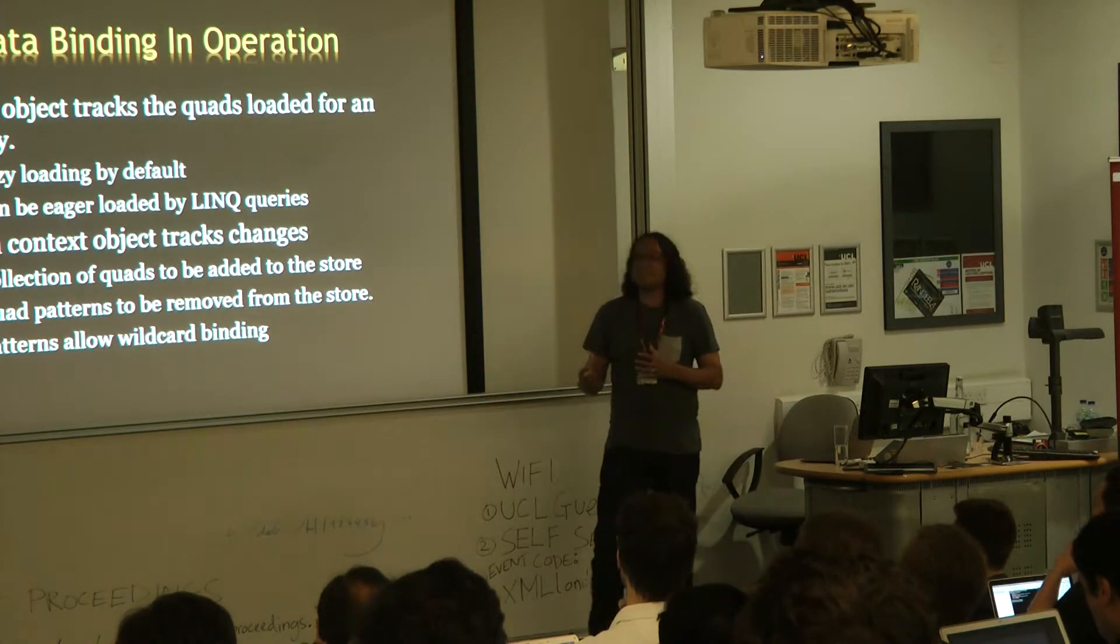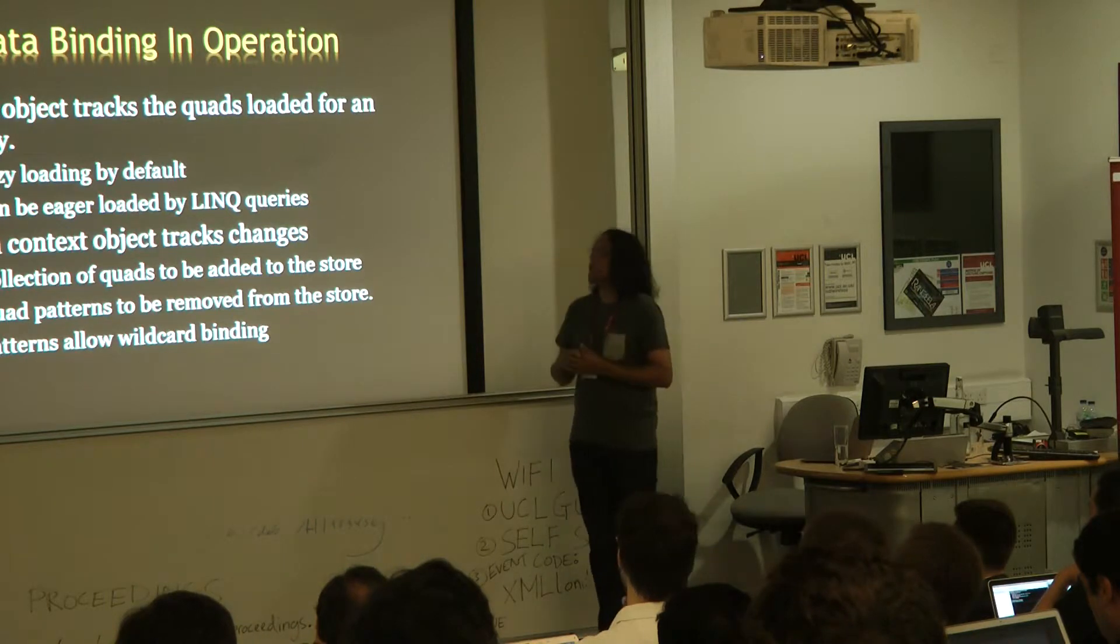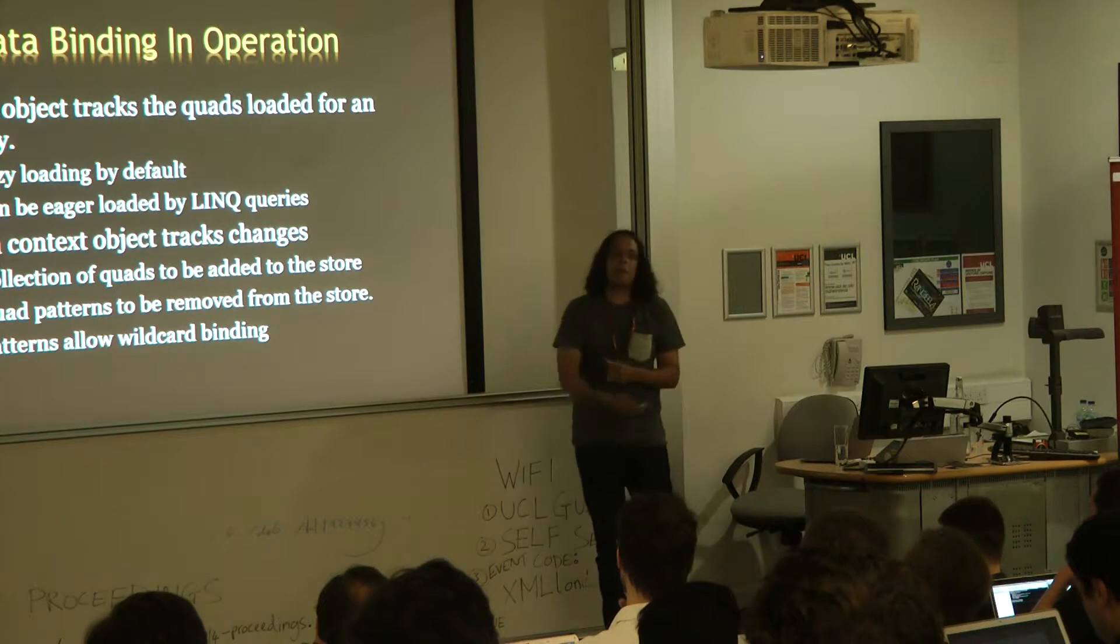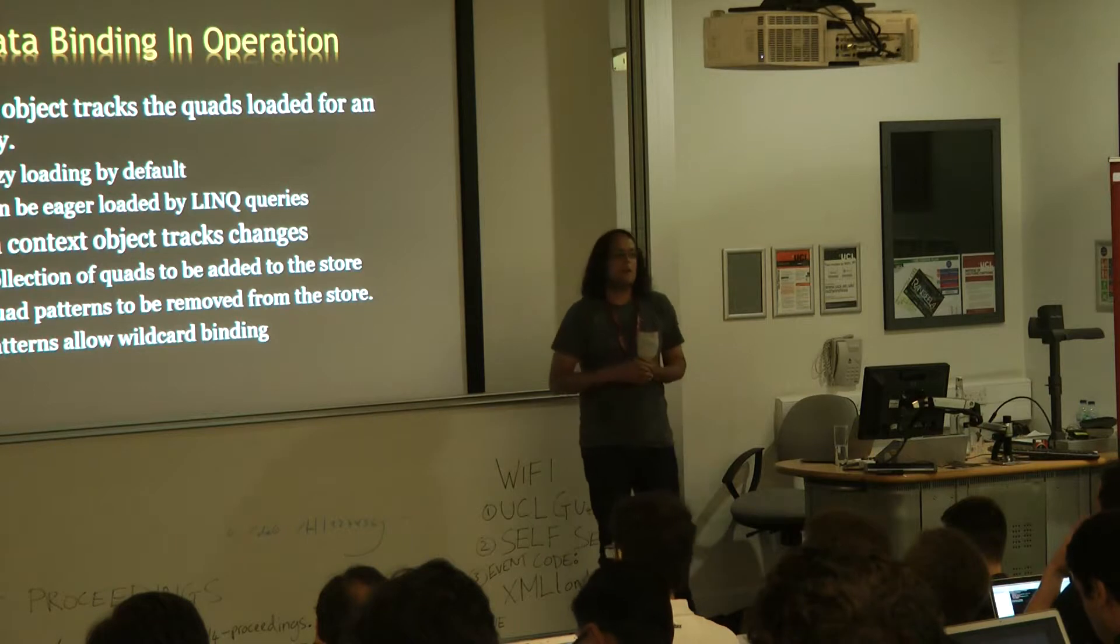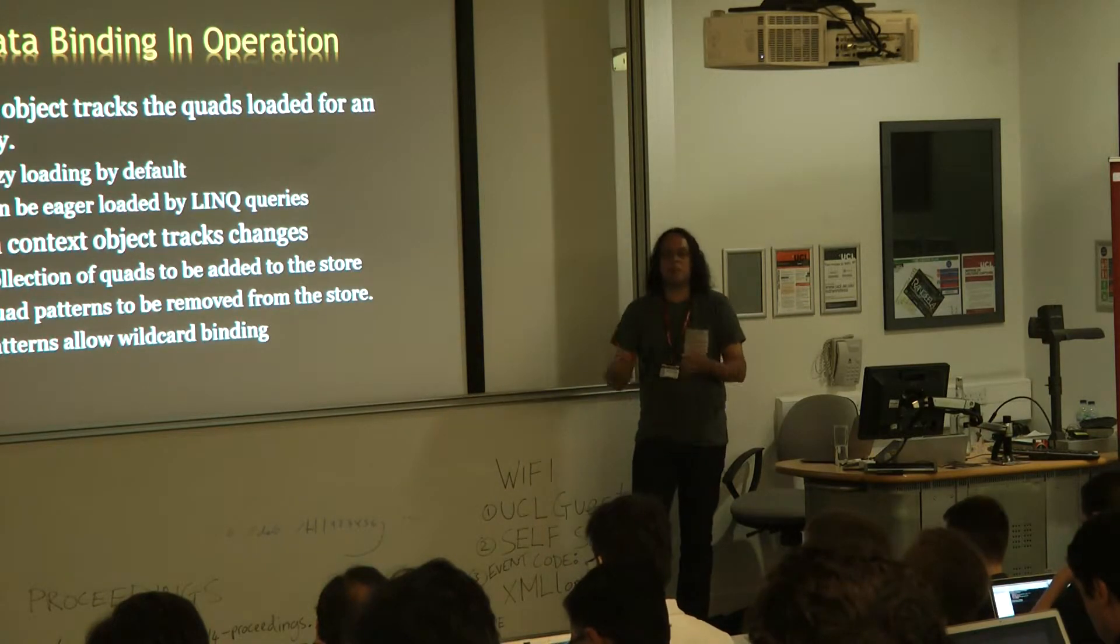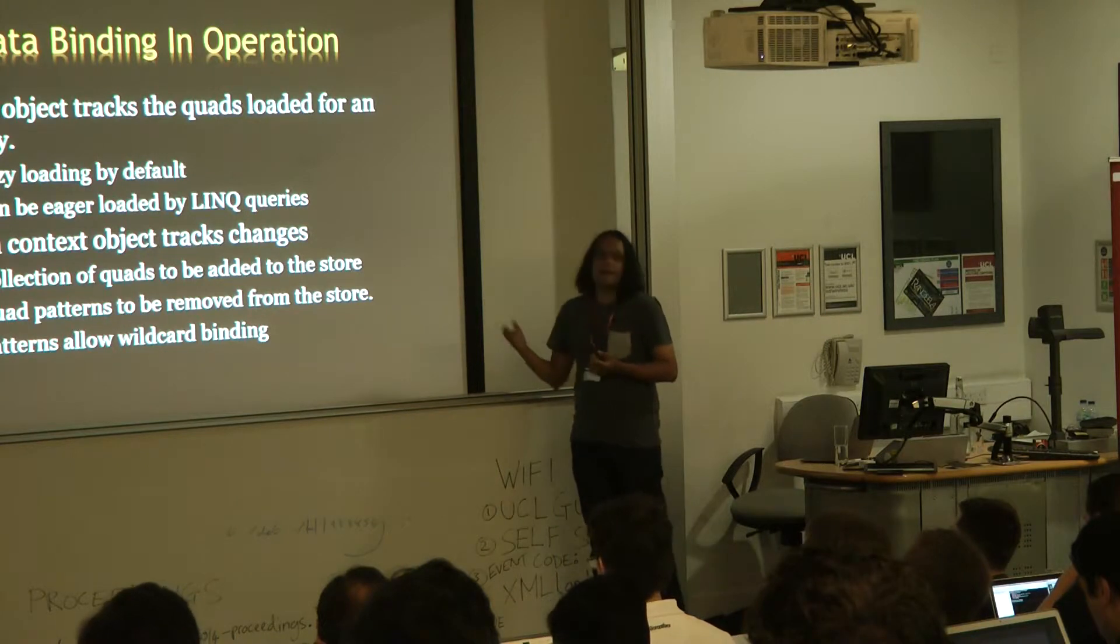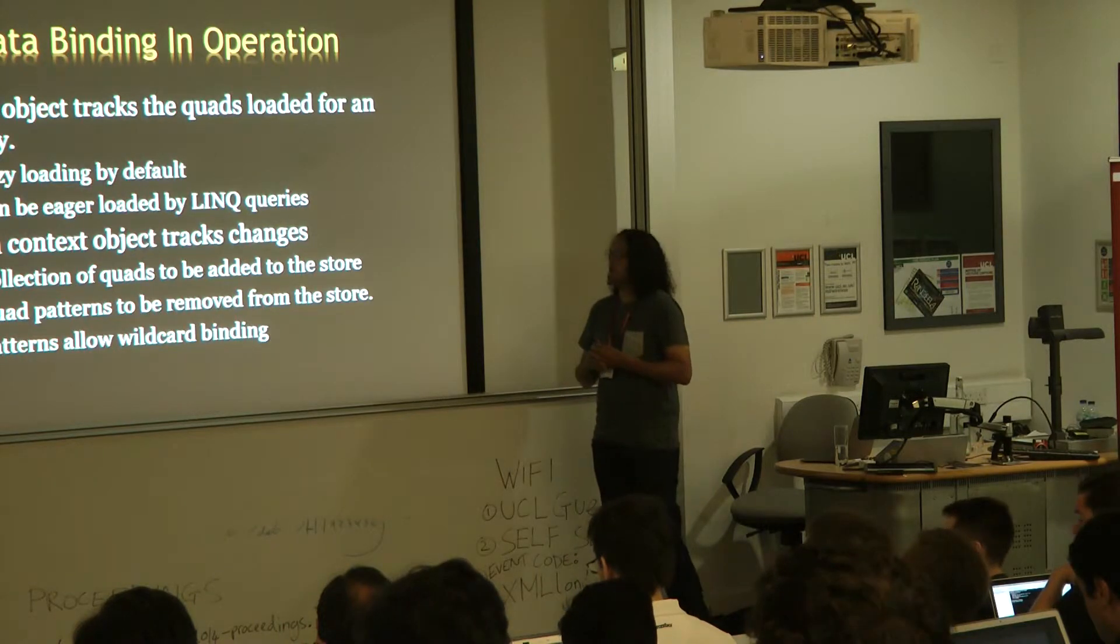So, with those generated classes, they all derive from a DataObject-based class, and that DataObject is tracking the list of quads in this case, that's triples plus the graph URI, that are loaded for a particular entity at any given time. By default, we lazy-load, so we only start off with just knowing what the resource URI is, and then the first time we ask for a property, we grab all of the forward-direction properties, and the inverse ones we just always lazy-load. As you'll see in the discussion on LINQ to SPARQL, we can also just eager-load, which just helps with performance.